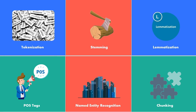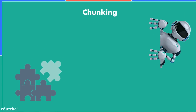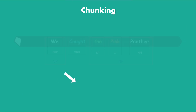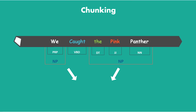Once we have divided sentences into tokens, done stemming and lemmatization, and added POS tags and named entity recognition, it's time to group it back together and make sense out of it — that's where chunking comes in. Chunking means picking up individual pieces of information and grouping them into bigger pieces, also known as chunks. In the context of NLP, chunking means grouping words or tokens into chunks. For example, 'pink' as an adjective, 'Panther' as a noun, and 'the' as a determiner are all chunked together into a noun phrase.